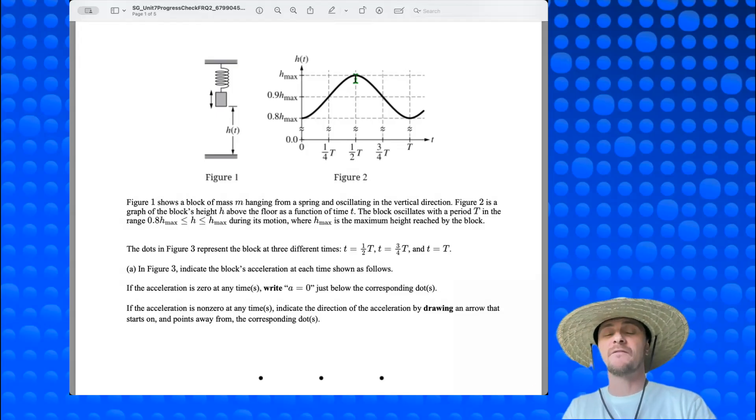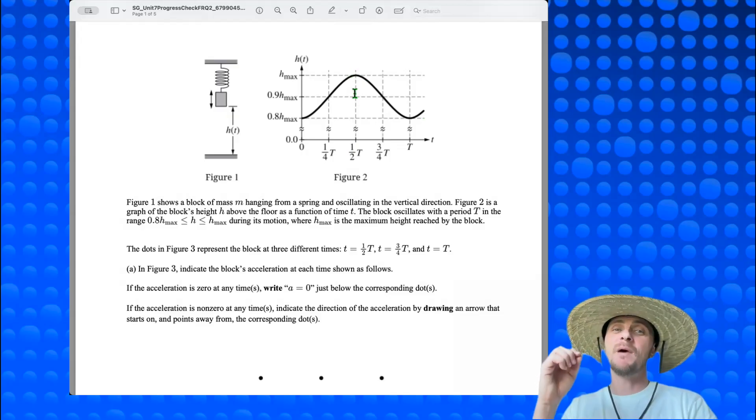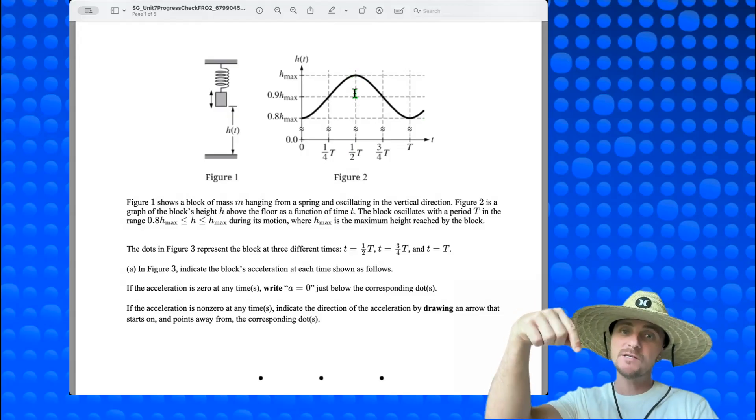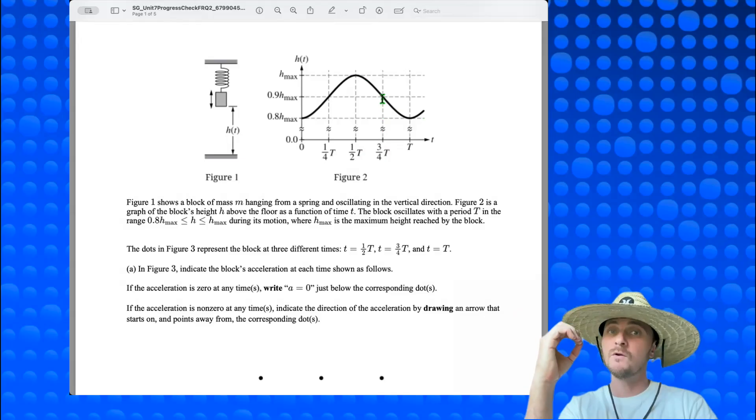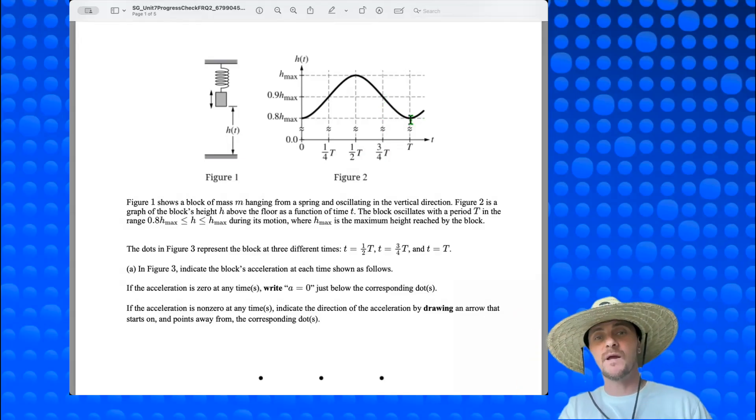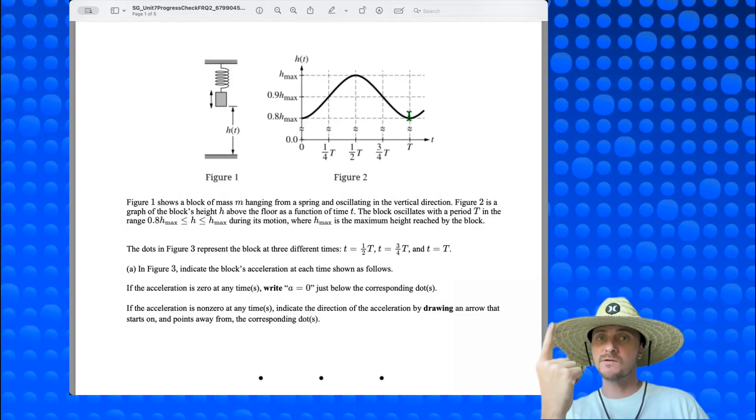So why did I take all that time to discuss restoring force? Because acceleration is directly proportional to restoring force and in the same direction. So if I have a maximum restoring force at one-half capital T downward, then I have a maximum downward acceleration at one-half capital T. If I get to 0.9 h max when my time is three-quarters capital T, and I have a zero restoring force, then I have a zero acceleration. And last but not least, when I get to the bottom-most part of my oscillation at 0.8 h max or time capital T, I have a maximum upward restoring force, and thus a maximum upward acceleration.